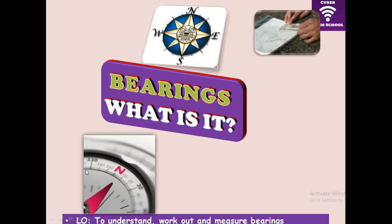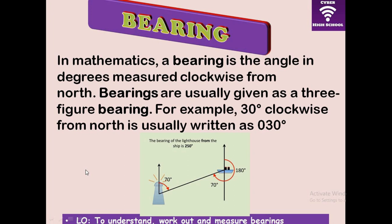First of all, we need to understand that bearing is measured in degrees — it's actually referring to an angle that is measured clockwise from the north. When you talk about bearing, it is important to understand that bearing is always represented in three figures. So when you have an angle like 30 degrees, it should be represented as 030 degrees.